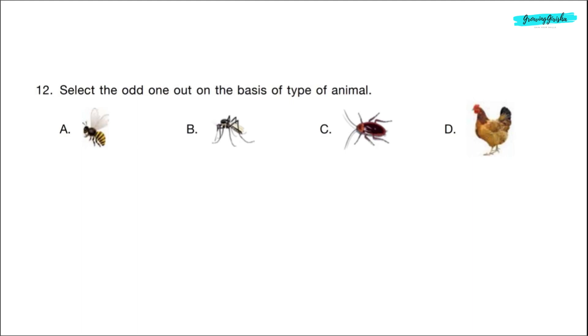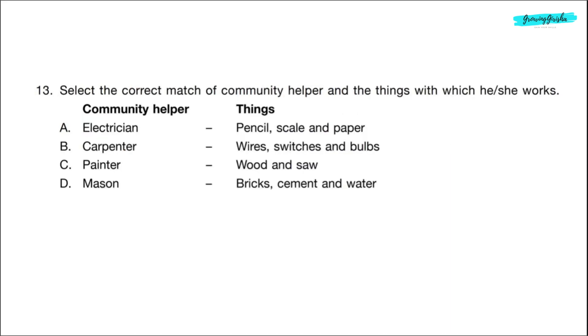Question 12. Select the odd one out on the basis of type of animal. Option A, B and C are insects. And option D, hen. It is a poultry animal. Correct answer is option D. Question 13. Select the correct match of community helper and the things with which he, she works. Electrician uses wires, switches and bulbs. Option A is incorrect. Option B, carpenter. He uses wood and saw. It is also incorrect.